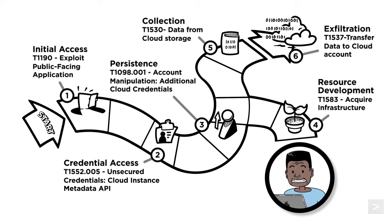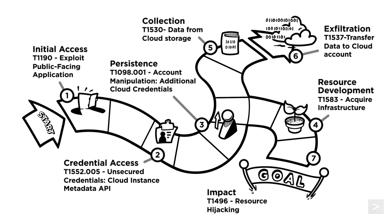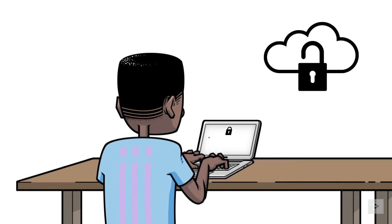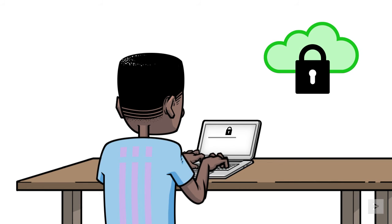Which brings us back to Mark, who's wishing he had learned more about the security settings of the new platform before migrating. Luckily, this adversary only wanted to use the extra servers to make some money through crypto mining — and that's what they did. While this definitely increased the organization's cloud service bill, no critical services or confidential data was compromised. With a better understanding of what happened and what could have happened, the team took the time to strengthen the security settings of their new cloud service.